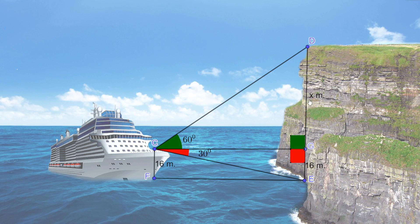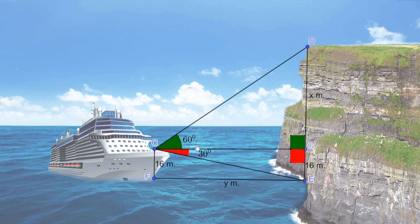The distance between the ship and the cliff is FE, which we call y meters. If FE length is y meters, then CG length is also y meters, because CGEF is a rectangle.